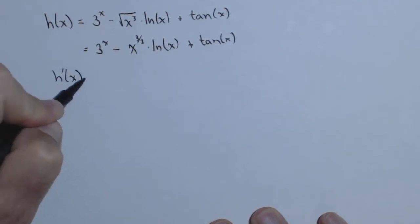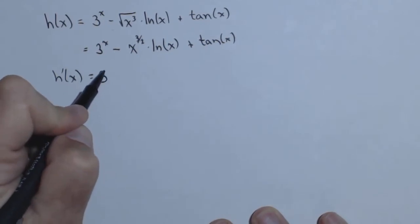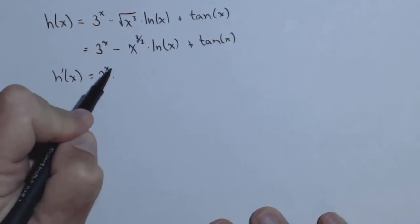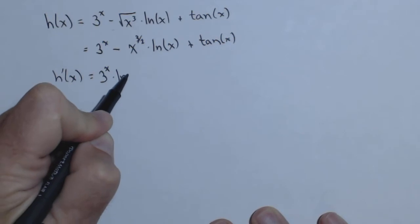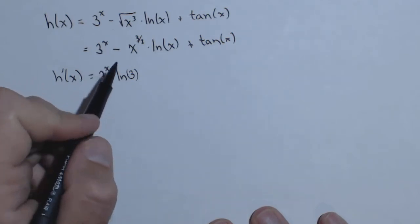Now we can do h'(x). Exponential functions always have themselves in the derivative. If the base is something other than e, you multiply by the natural log of the base. Don't need a chain rule here because the exponent was just x.